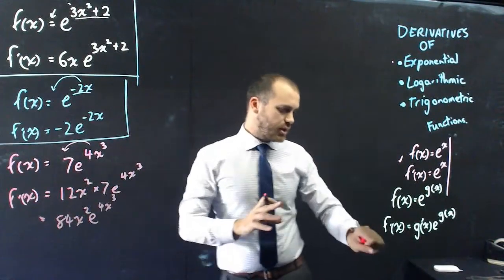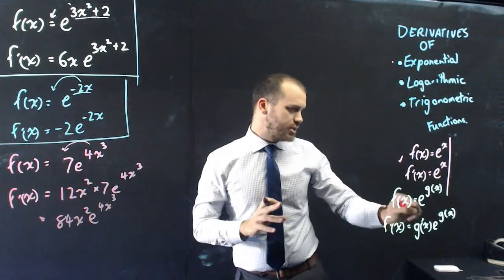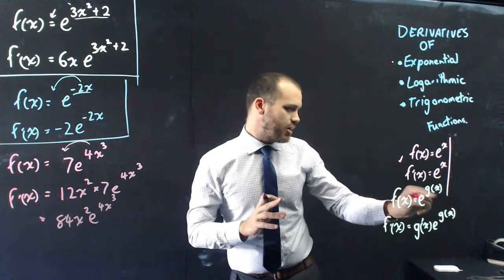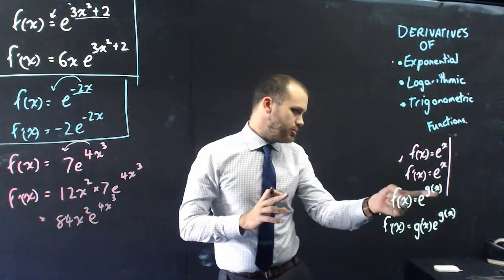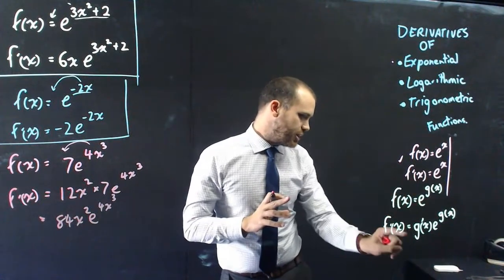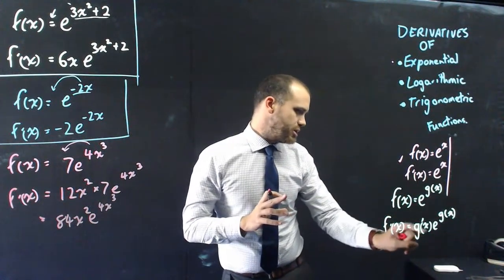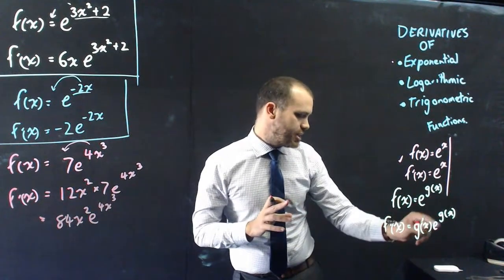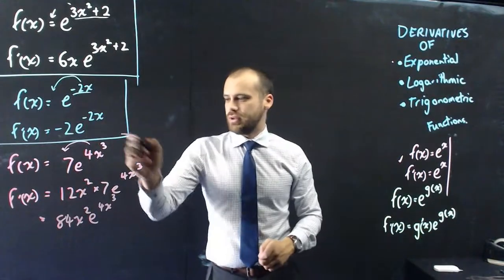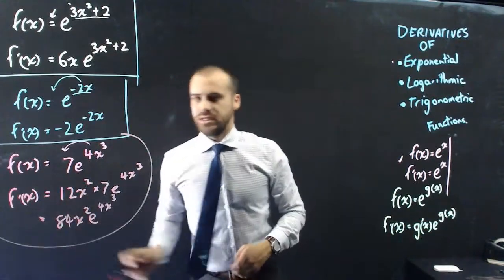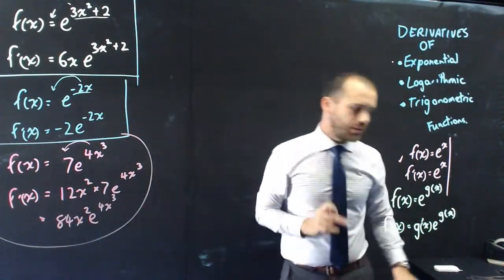If a function is e to the power of a function, you move the function at the bottom to be g dash of x times e to the g of x. That is how to deal with exponential functions.